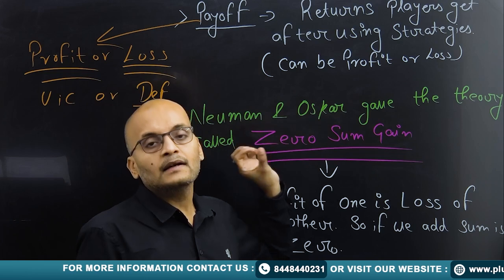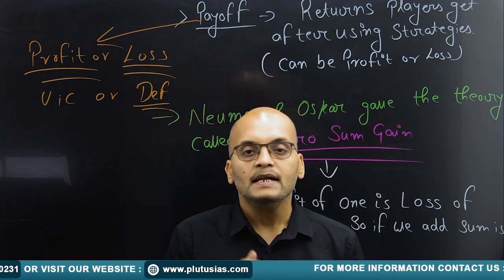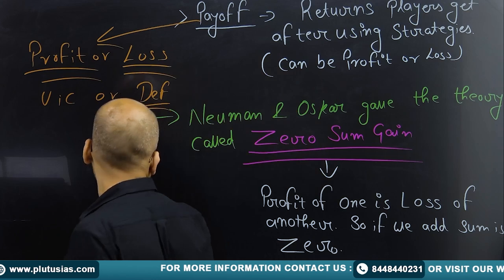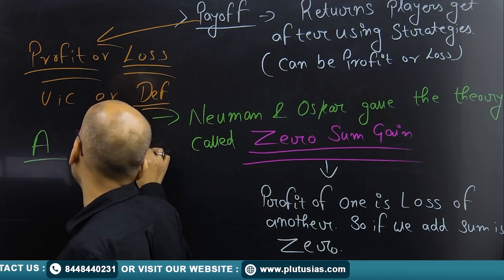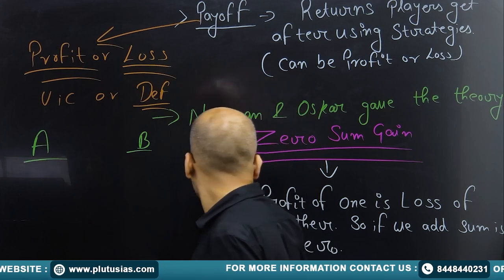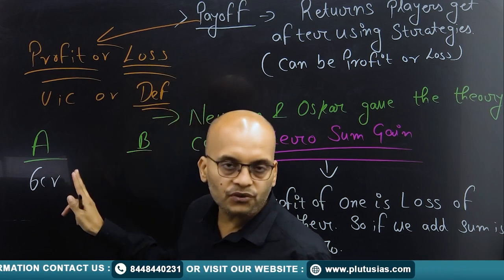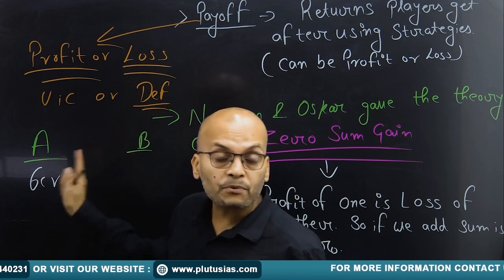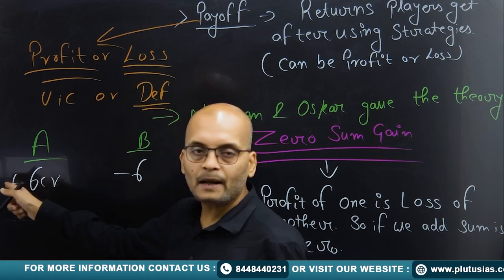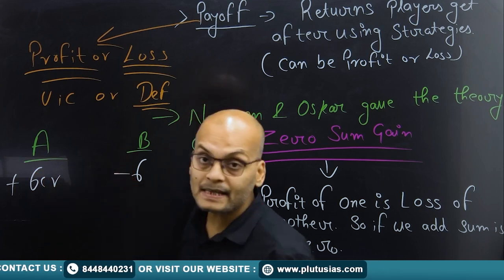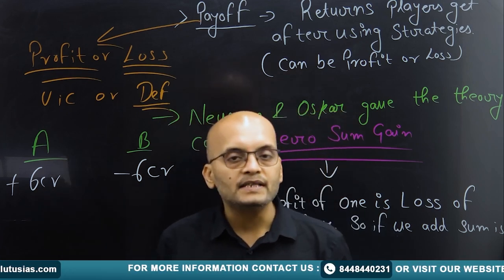Von Neumann and Morgenstern gave a very important concept: zero-sum game. If we have two firms, firm A and firm B, and firm A is making a profit of 6 crores, then simultaneously firm B is making a loss of 6 crores. Profit of one firm will be loss for another firm. Adding the total payoff — plus 6 and minus 6 — gives zero. That's what the name means: zero-sum game.